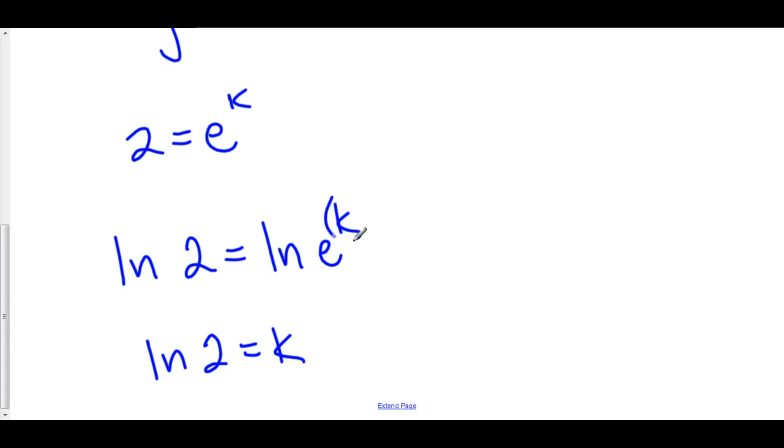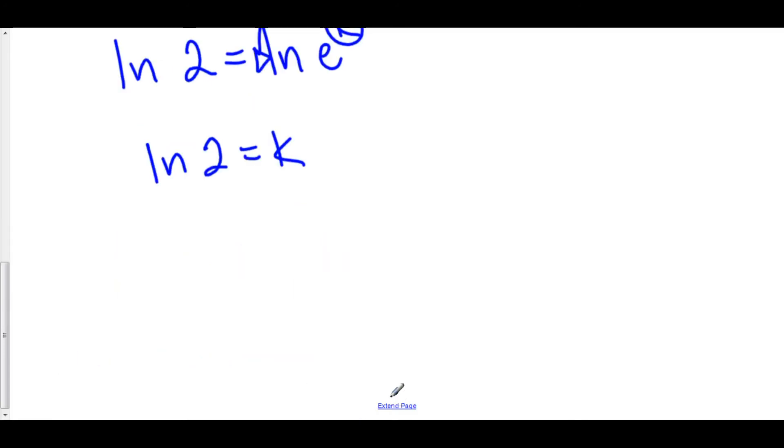Because we can pull the k in front of the natural log of e, and the natural log of e is just 1. So, hey, look. We've got our constant of growth. It's the natural log of 2. That's pretty cool.